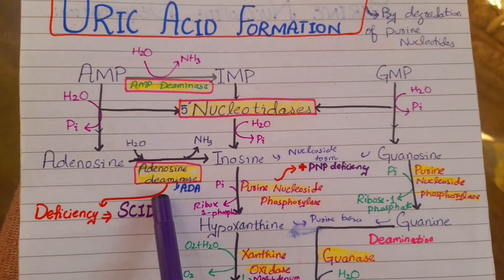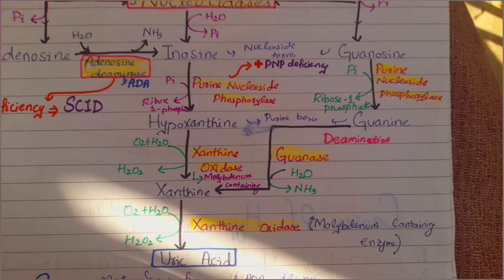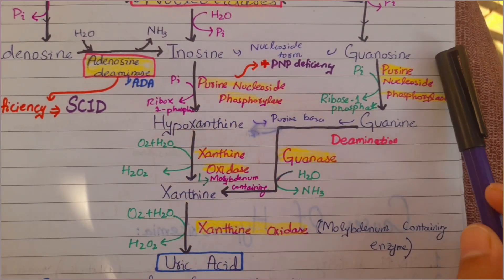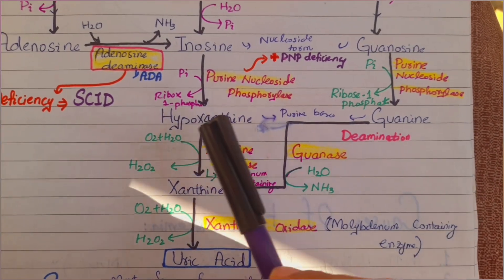Adenosine is deaminated by the enzyme adenosine deaminase to form inosine. In the next step, inosine and guanosine will be converted to their purine bases — hypoxanthine and guanine.